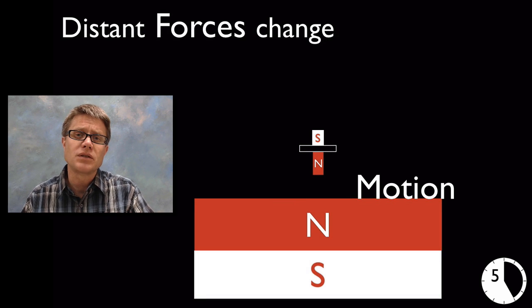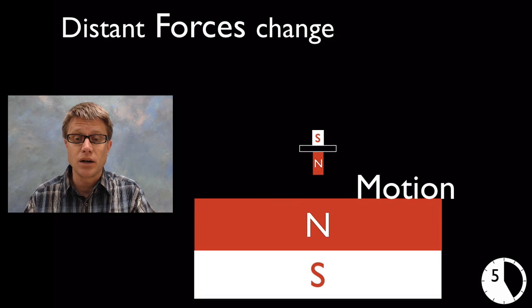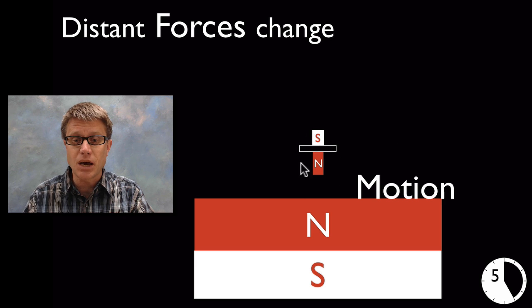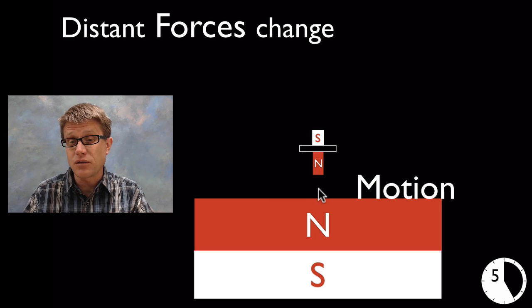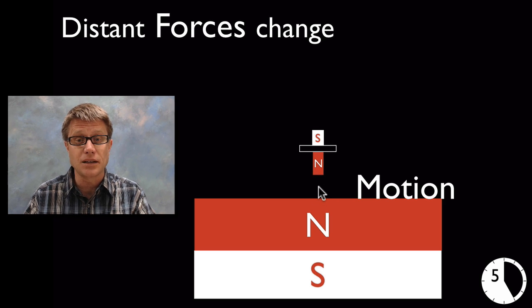But remember we can have distant forces that are applying on different objects as well. And so that spinning gyroscopic magnet, the reason it is able to levitate, is there's going to be a magnetic force between these two northern poles of the magnet.